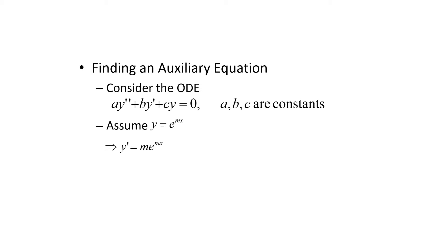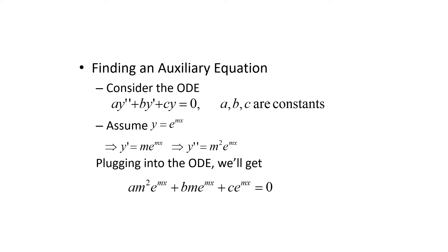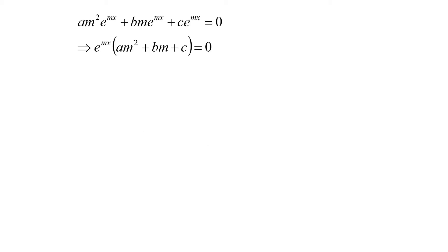That means y prime is m e to the mx, and y double prime is m squared e to the mx. If we plug those values into our differential equation, we get a m squared e to the mx plus b m e to the mx plus c e to the mx equals zero. All of these terms have an e to the mx in them, so we can factor that out. So e to the mx times a m squared plus b m plus c has to equal zero. And e to the mx doesn't ever equal zero, so that means the quadratic a m squared plus b m plus c must equal zero.